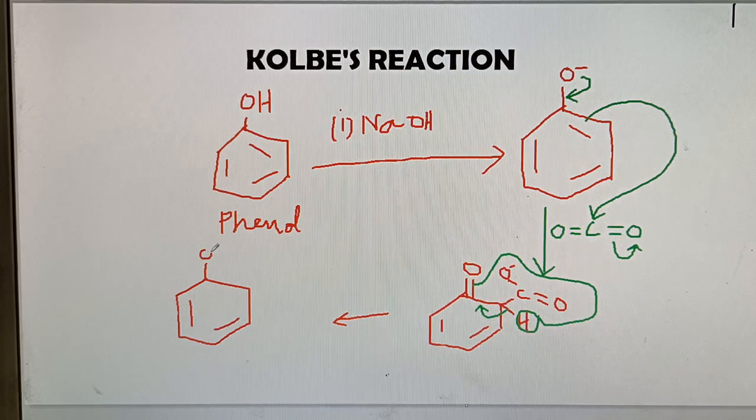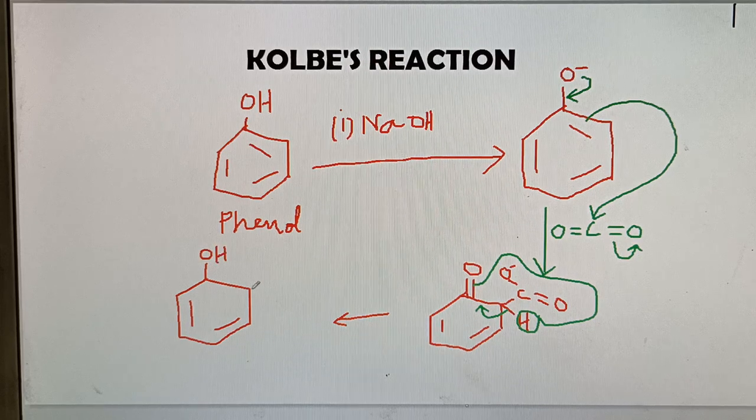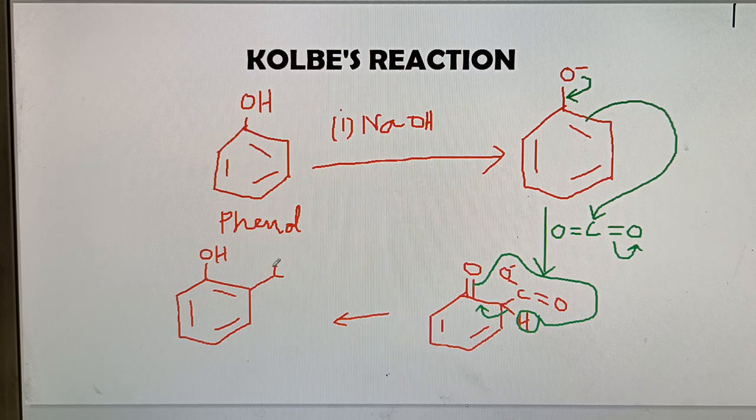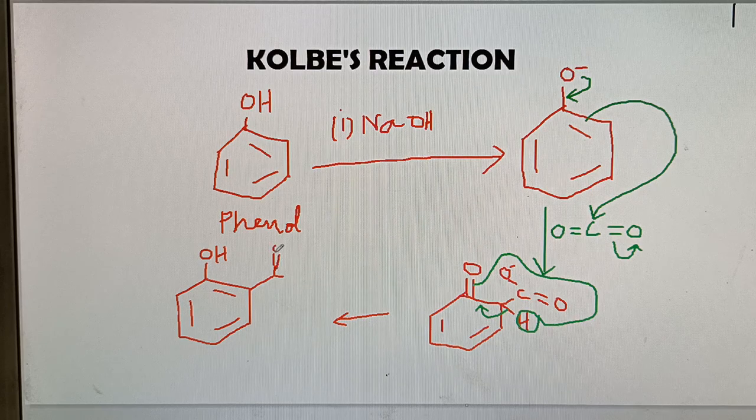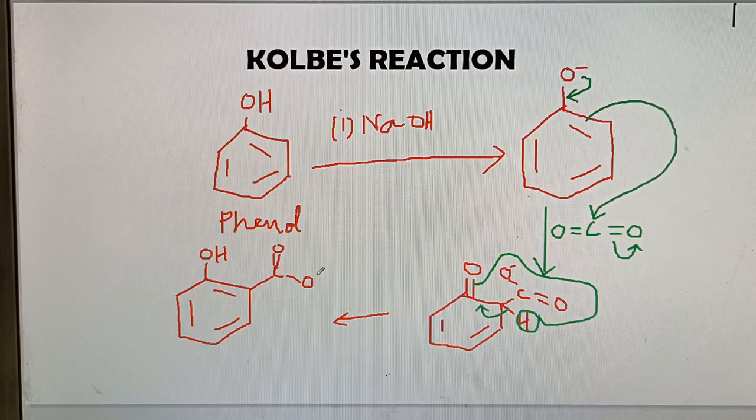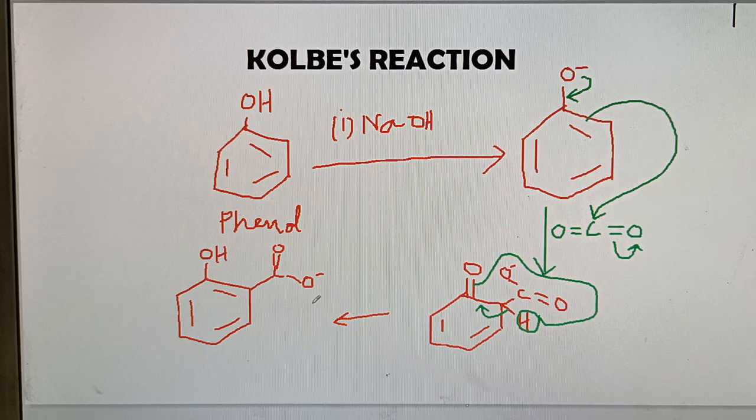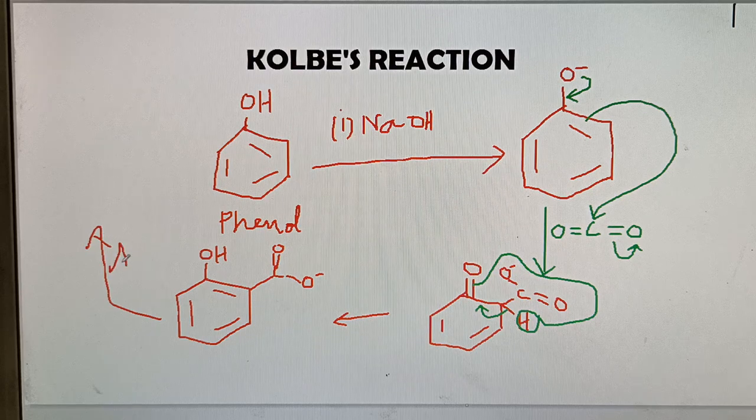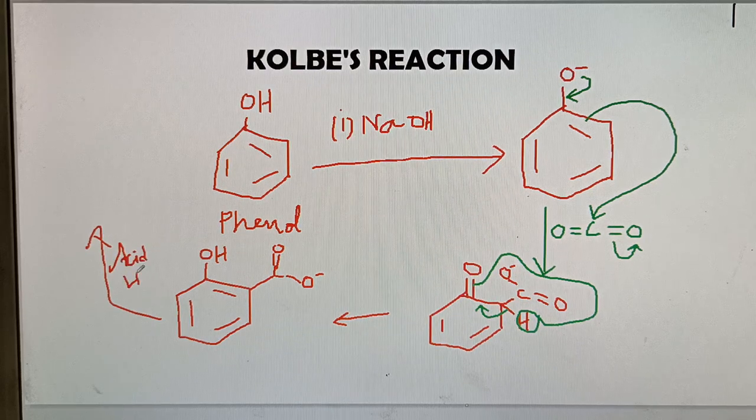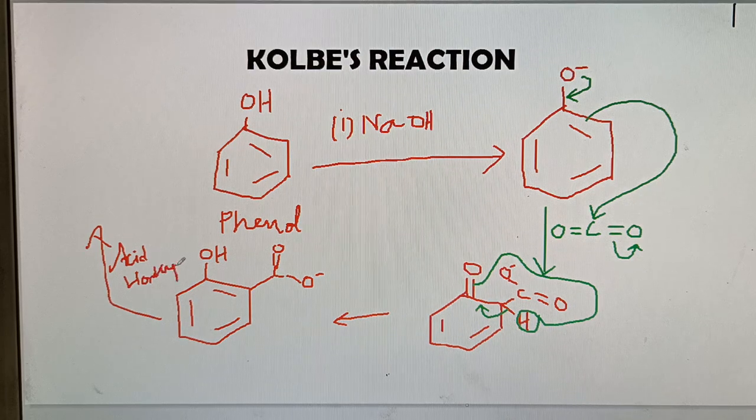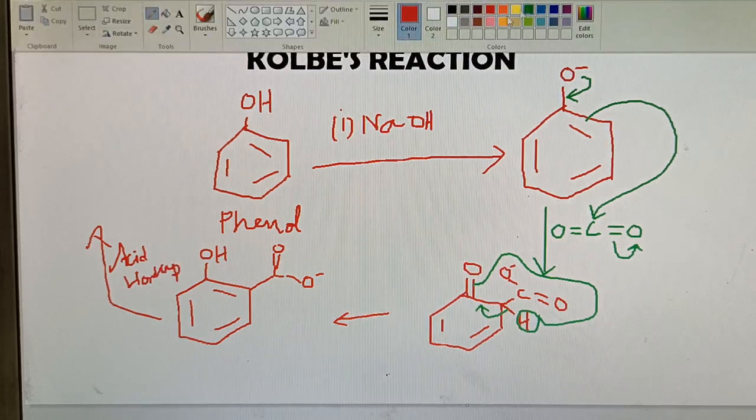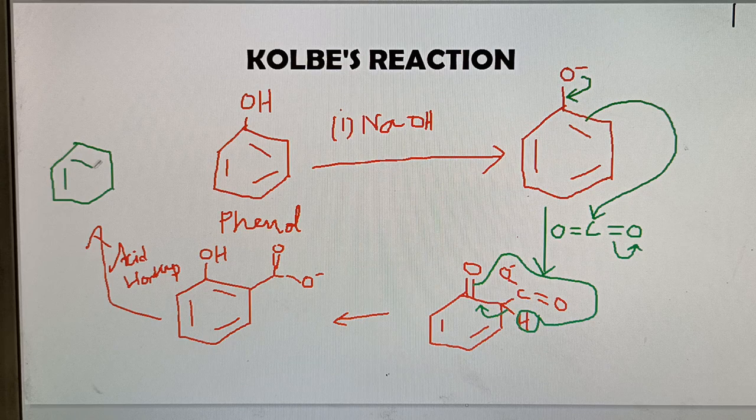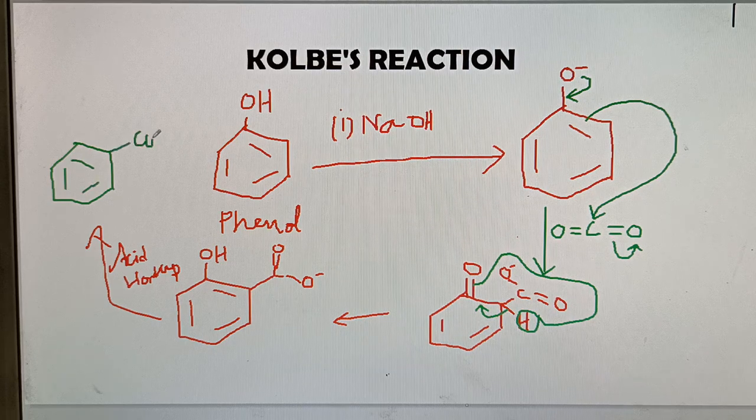This kind of intermediate is formed. OH, this double bond C, double bond O, O minus. Clear? Now, after acid workup, you will get the final product that is salicylic acid.